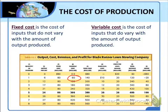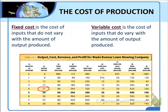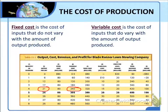Column four shows Blade Runner's variable cost, which is what it must pay its workers. This cost does increase as output increases, because the company must hire more workers in order to mow the lawns. The variable cost is $60 times the number of workers hired. For example, if we want to mow 21 lawns, then to do that we have to hire four workers, and 60 times four is $240, so that will be our variable cost. Any other variable costs, such as the cost of gasoline for the lawn mowers, are insignificant.